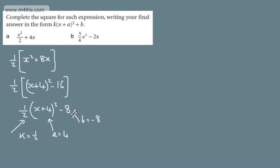So we've completed the square, first by taking out the factor of 1 half, completing the square within the bracket and then multiplying back through.